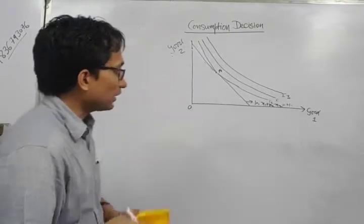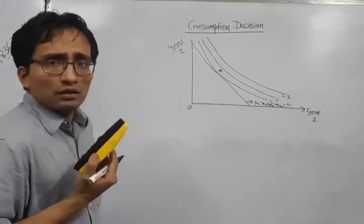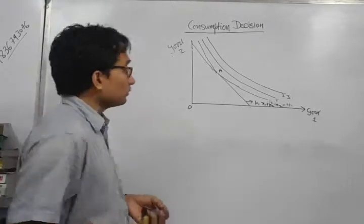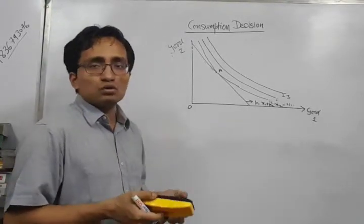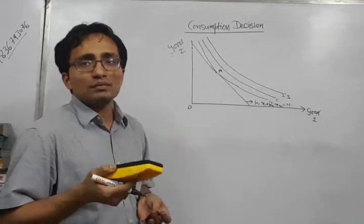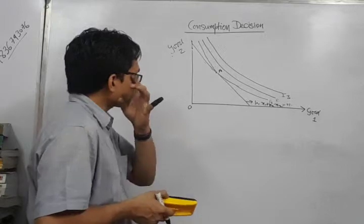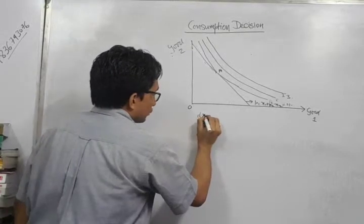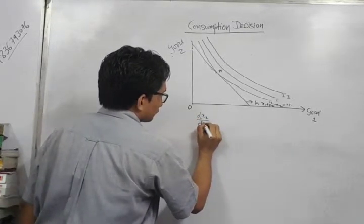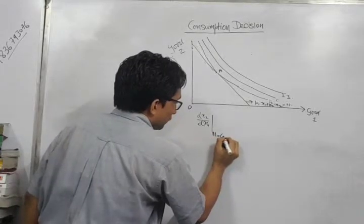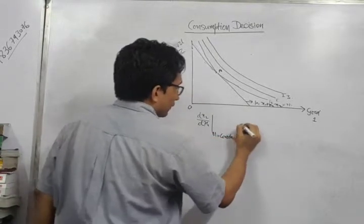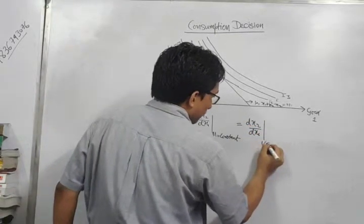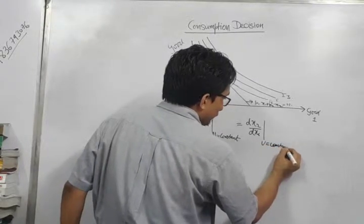Given the level of preferences and the given level of utility, as well as the budget line showing that income is constant, the slope of the budget line — that is dX2/dX1 given income constant — is equal to dX2/dX1 given utility constant, which is the slope of the indifference curve. Both the indifference curve and the budget line have negative slopes. For the purpose of analysis we will be considering the absolute value of the slope.